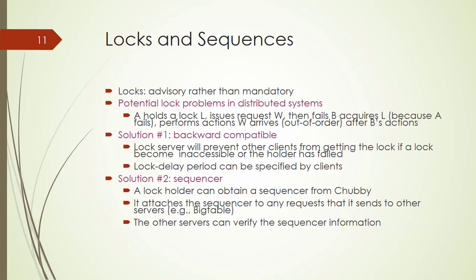The other topic is locks and sequencers. Locks are basically advisory rather than mandatory. A Chubby lock provides two types of lock: advisory and mandatory. There are potential lock problems in distributed systems. For example, A holds lock L and issues a write request, but then fails. B acquires lock L because A failed; the performed action — writing — arrives out of order after B's action. There are two possible solutions: backward compatible and sequencer.